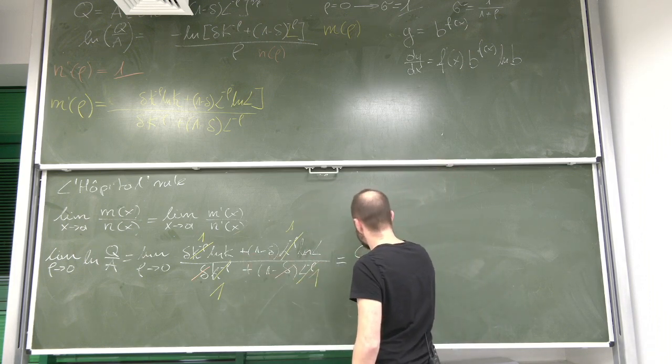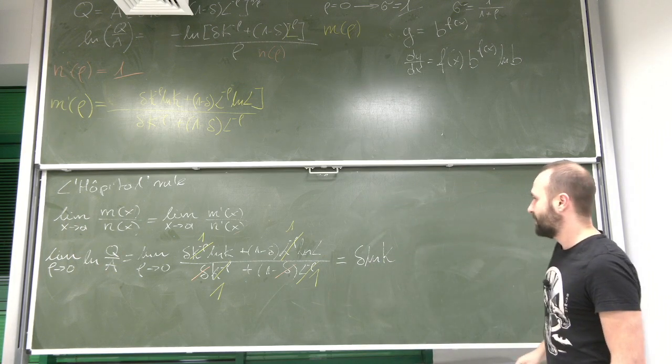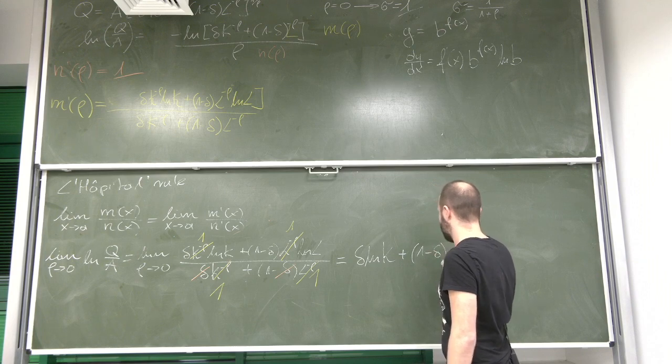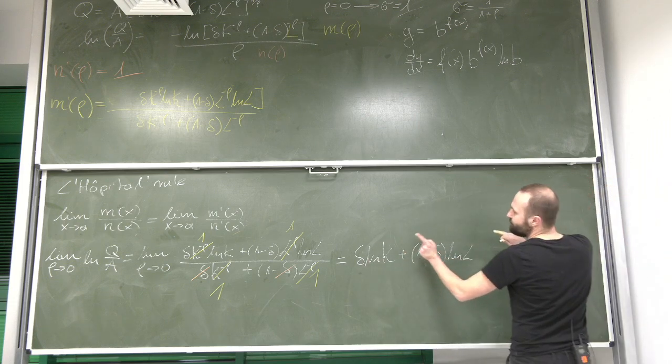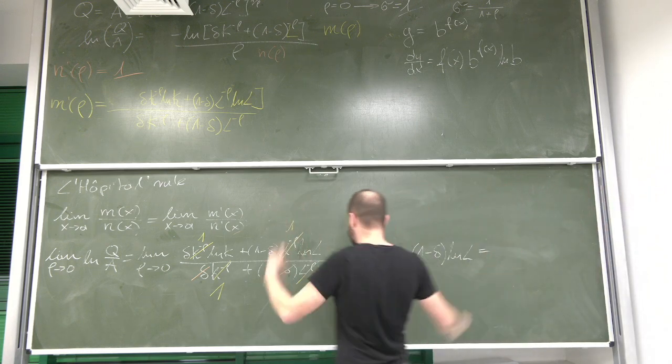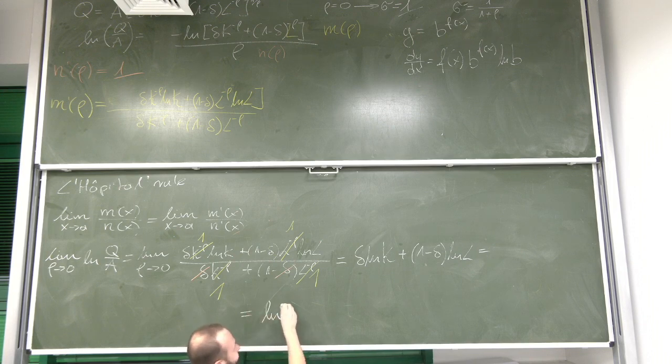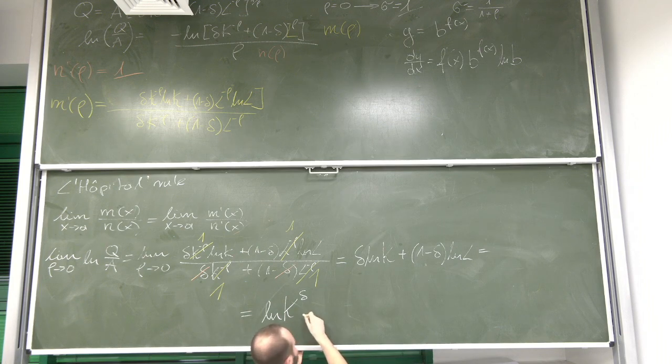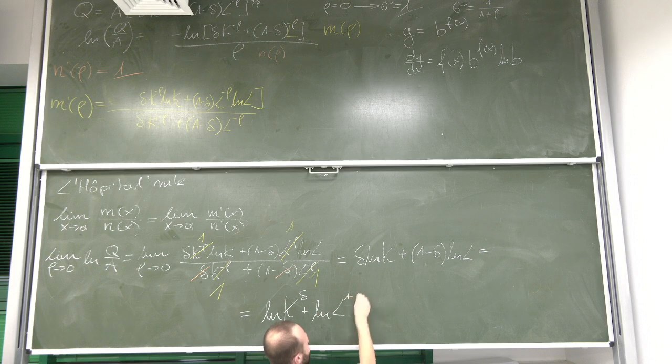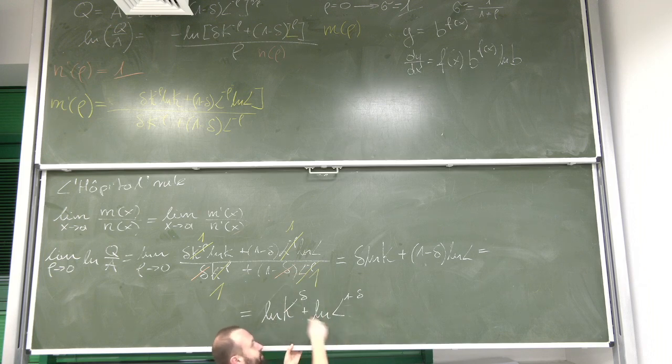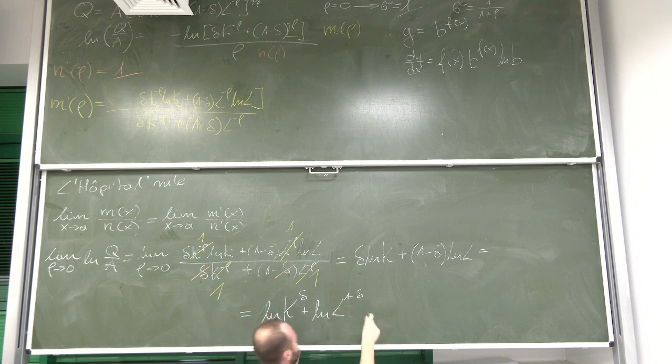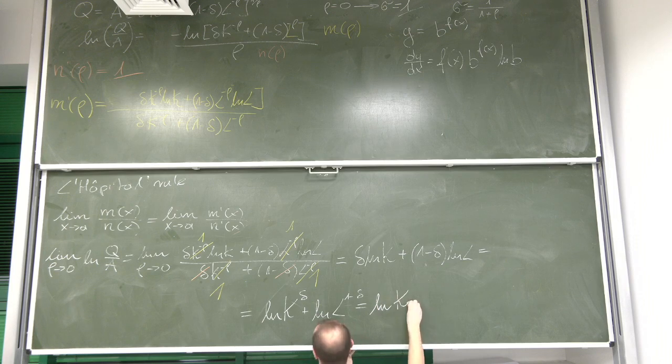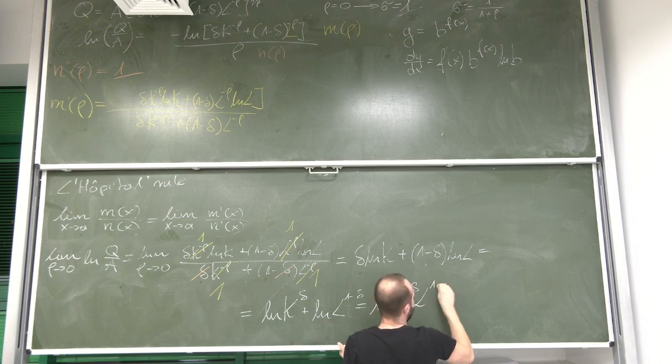We are just divided by 1 in the bottom. So what we've got out of here is the expression delta ln k plus 1 minus delta ln l. So again, we can start using properties of logarithms. We can take the coefficients and move them to exponential position. So we've got ln k to the power of delta plus ln l to the power of 1 minus delta. Then I can combine the two, because sum of the logarithms is a logarithm of a product.